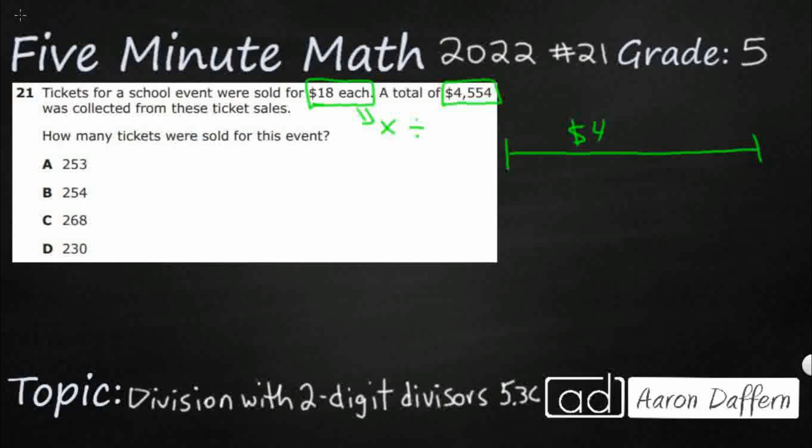I've got $4,554 as my total, and I've got $18 tickets. So here's an $18 ticket. The question is, how many tickets were sold? So how many 18s can I get out of this $4,554? I've got two different options here.